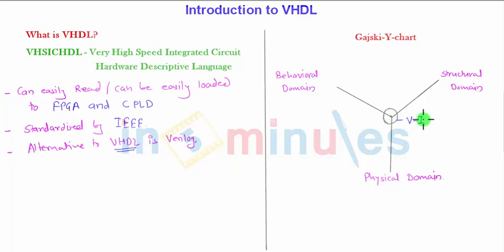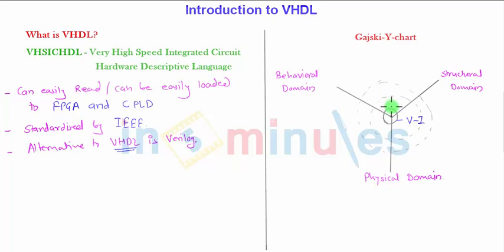As you draw concentric circles outward from the center, the extent of each domain expands with each circle. Let me name them one, two, three. The first circle is only related to the voltages and currents flowing through the logic circuits — a very basic level. The second circle extends further into the behavioral, structural, and physical domains, and corresponds to Boolean expressions or Boolean logic.